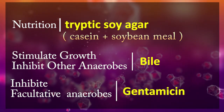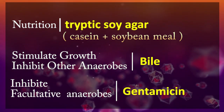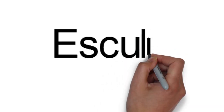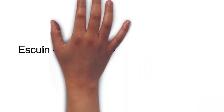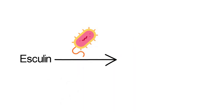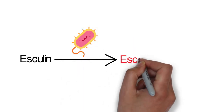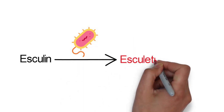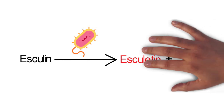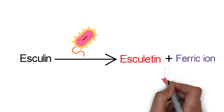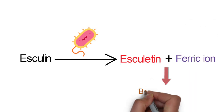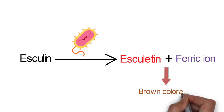Facultative anaerobes are inhibited by the antibiotic gentamicin. The medium also includes esculin, which Bacteroides fragilis is capable of hydrolyzing to produce esculetin. Esculetin reacts with ferric iron in the medium to produce a brown coloration around Bacteroides fragilis growth.